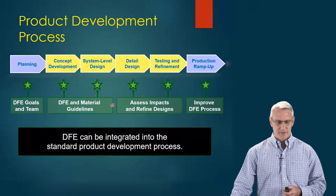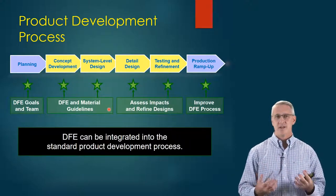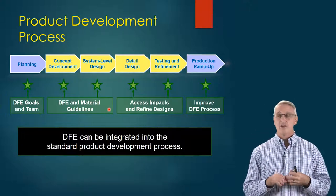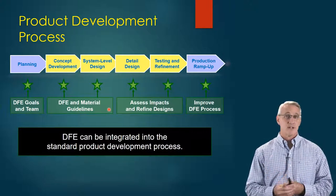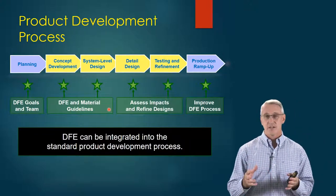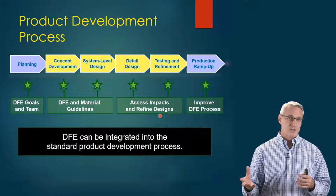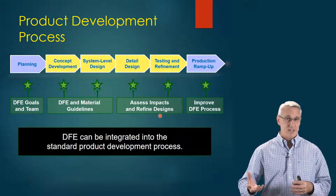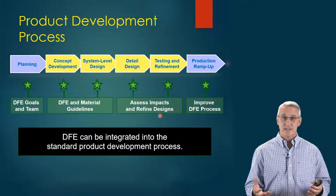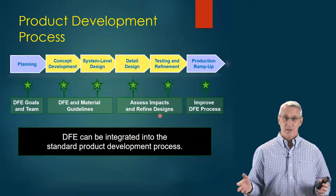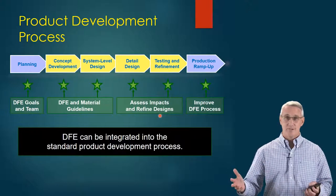Next up, under concept development and system-level design, this is where you're deciding what materials you're going to use, what are the guidelines, what are your goals that you're trying to reach. You don't have to try to do everything all at once — this can be a continuous, ongoing process. When you get your first go of what you want to do, you can refine the design later and assess impacts. Even after your first initial products are out, you may improve upon that. The better we get at this in industry, the more people will understand this process, and we can do it earlier for every product.